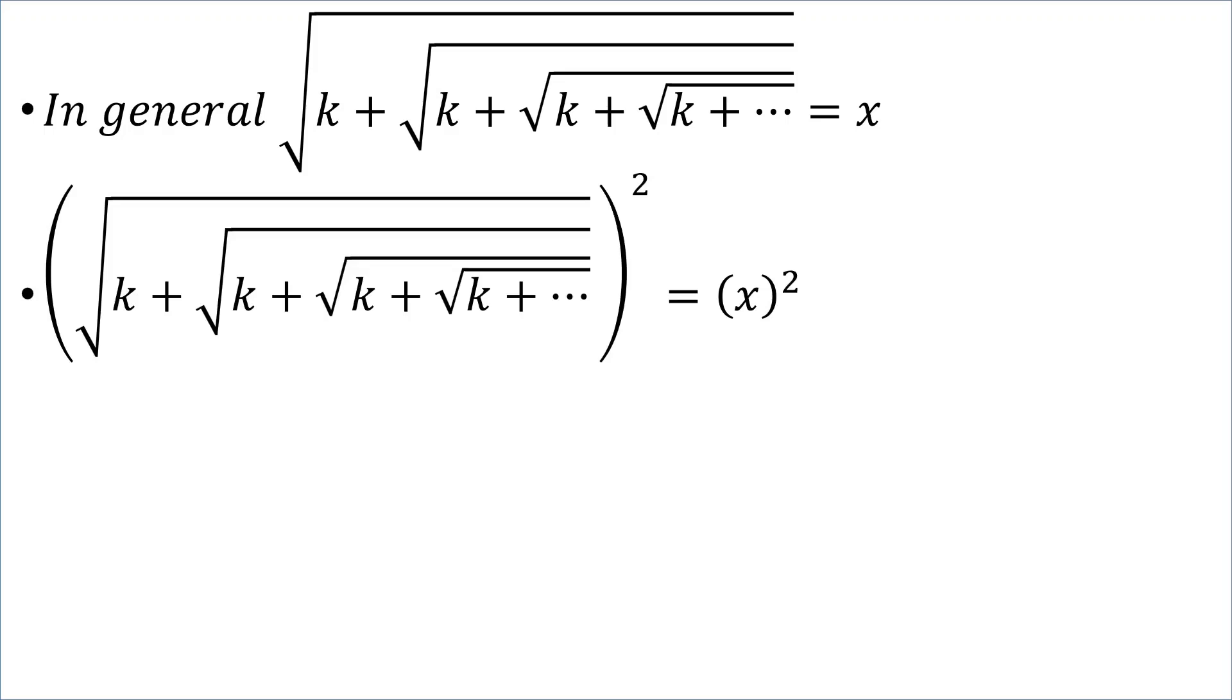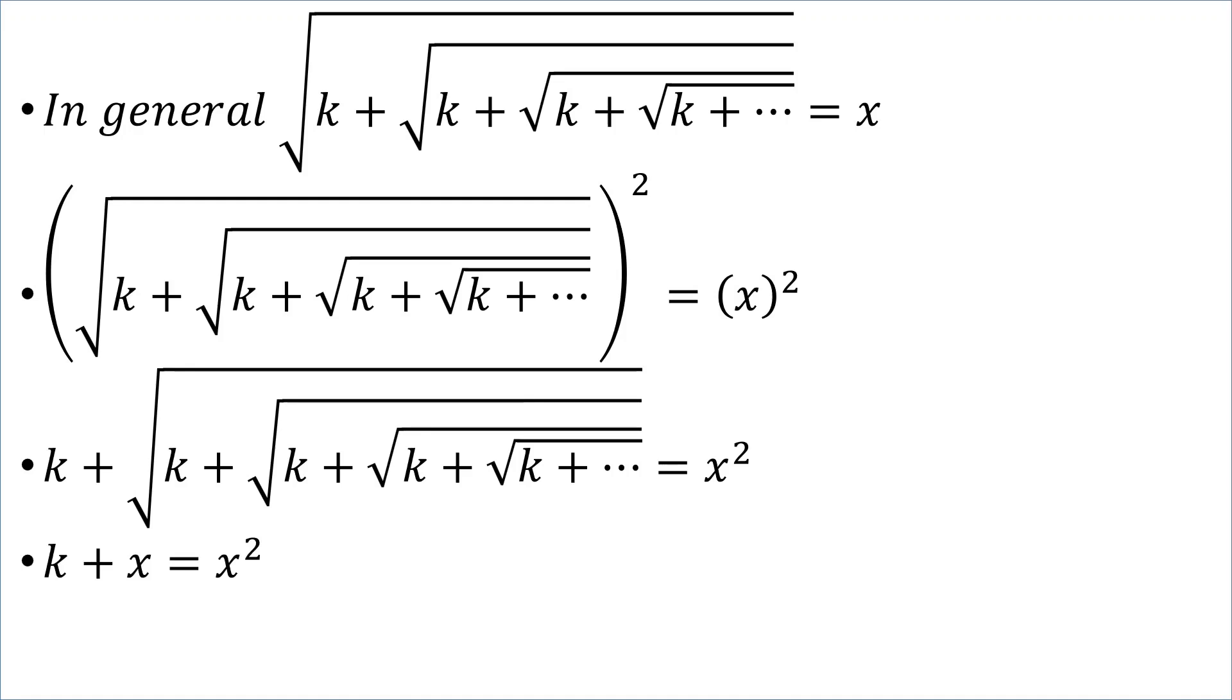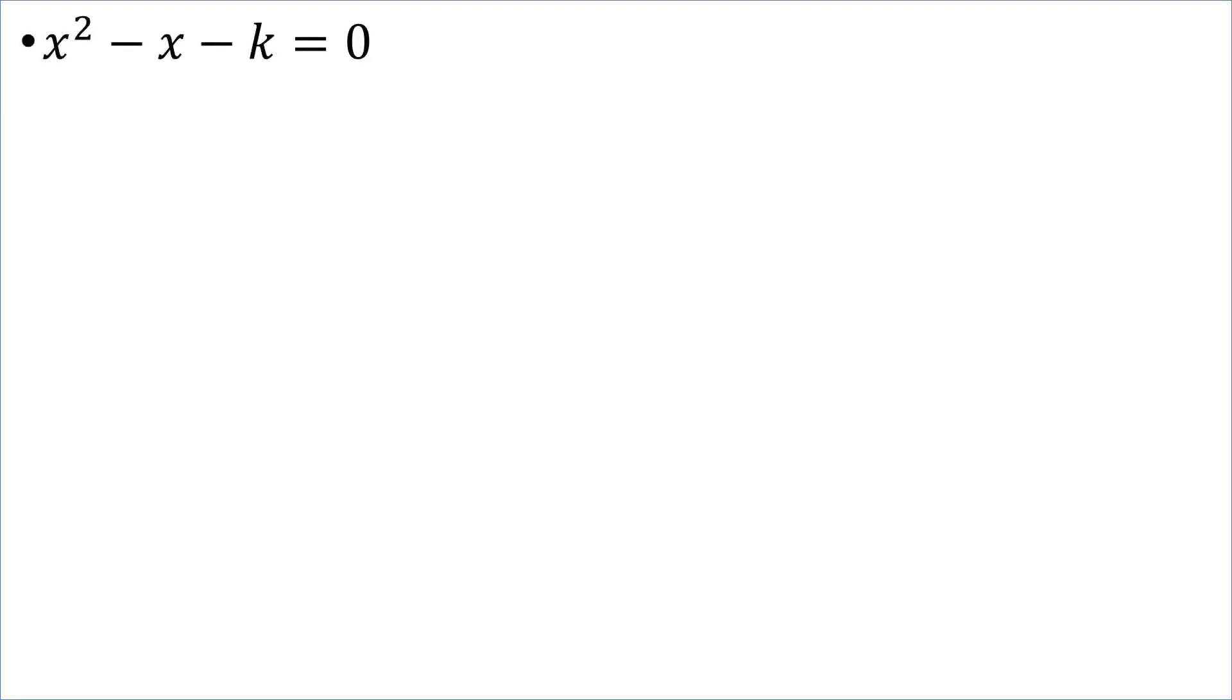So, again, if we square both sides, we'll get that k plus the square root, et cetera, forever is equal to x squared, which we'll replace with x. And, transposing, we'll have x squared minus x minus k equal to 0. But, we won't factorize this this time. We'll use the quadratic formula.